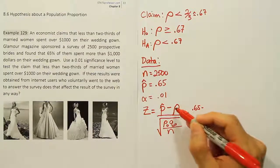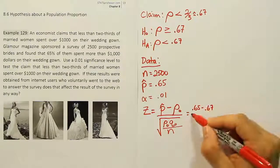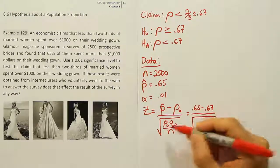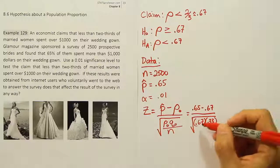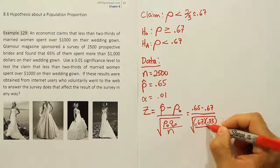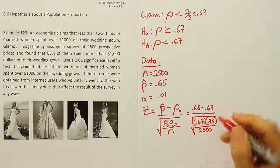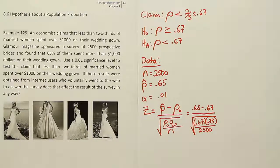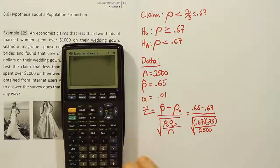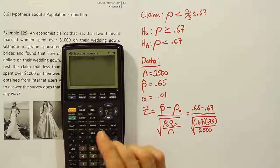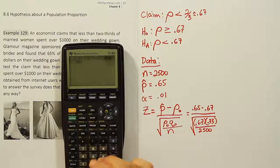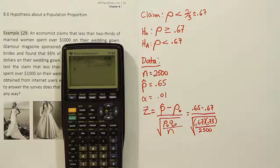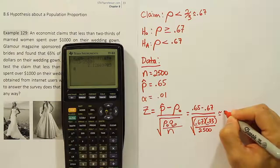Plugging in the numbers: p-hat is 0.65, and p-naught from H₀ is 0.67. Under the square root, p-naught is 0.67 and its complement q-naught is 0.33 — since 67% spent more than $1,000 and the remaining 33% did not — divided by 2,500. Make sure 2,500 is under the square root. Computing: the numerator is 0.65 minus 0.67, which is −0.02, divided by the square root of 0.67 times 0.33 divided by 2,500. The result is approximately negative 2.13.